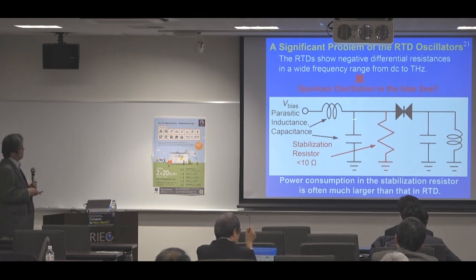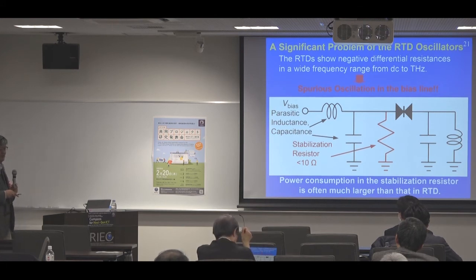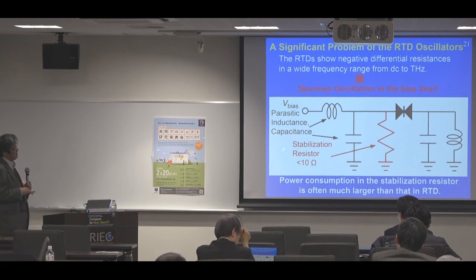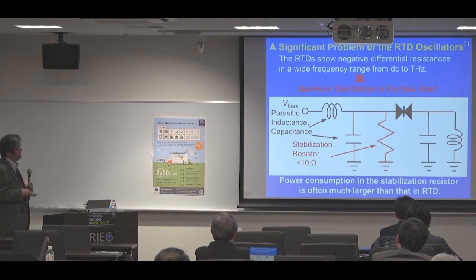We often use a stabilization resistor to compensate the negative differential resistance in the bias line. However, to compensate the NDR, the stabilization resistor must be much smaller than 10 ohms, which means the power consumption is very high. In fact, the power consumption in the stabilization resistor is often much larger than in the RTD itself.